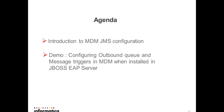In the agenda of this session we will have a quick look at JMS configurations in Informatica MDM. Then we will have a live demo to see how to create a JMS queue in JBoss EAP server and use that queue in MDM hub as an outbound queue to publish messages on data changes.